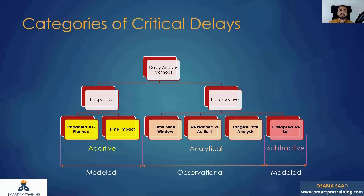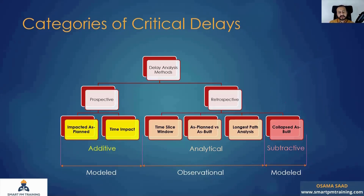In the retrospective method, I compare as-planned versus as-built: planned duration versus actual duration, and planned dates versus actual dates. We have four retrospective methods. One is the analytical model — I analyze the delays without adding or deleting activities in the program of work, using a specific procedure to analyze the actual progress and actual delays. It is also observational, meaning I observe the delay as it is.